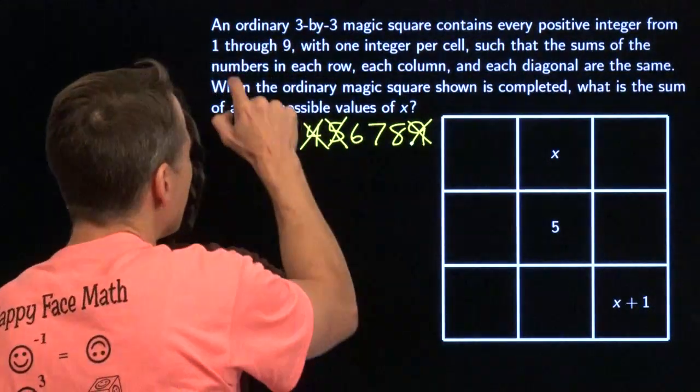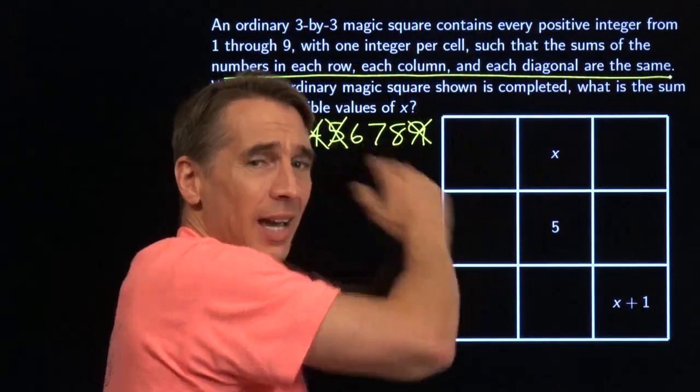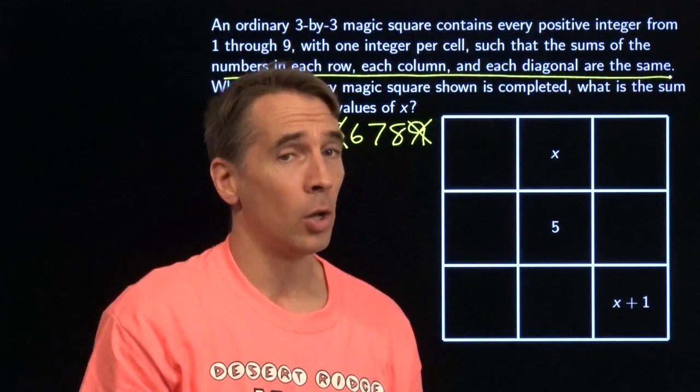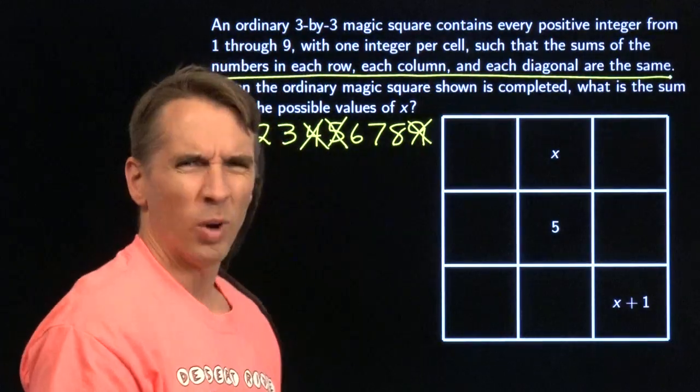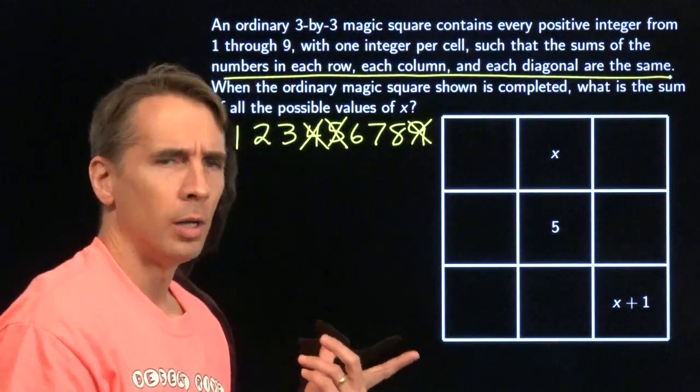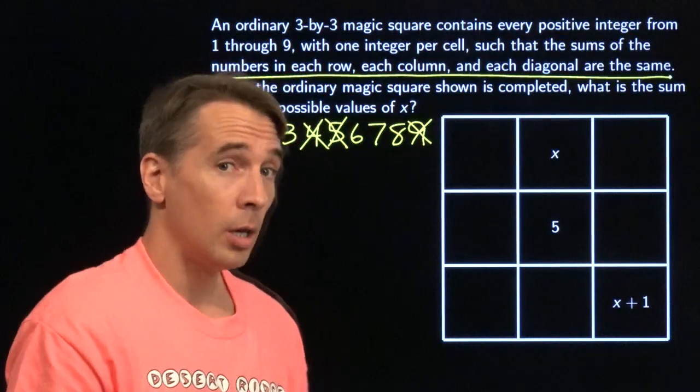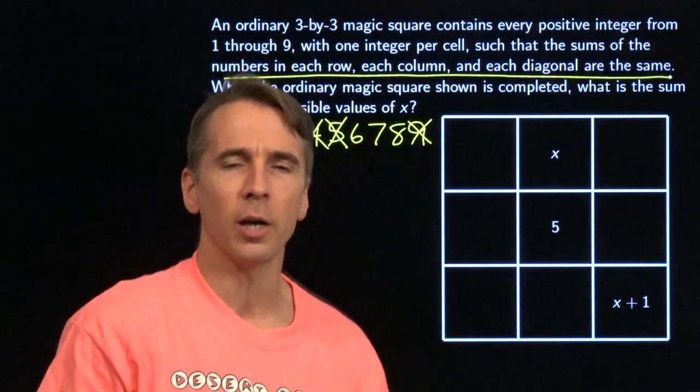Now, when I'm really stuck on a problem, I like to look back at the problem, look for something I haven't used yet. I'll look back, and I see this right there. That thing where the rows, the columns, the diagonals all have to have the same sum. We haven't used that yet, but what is that sum? I don't know. I don't know what the sum of each row is.